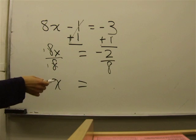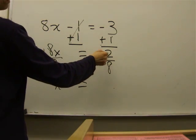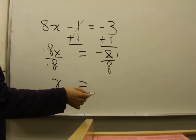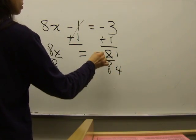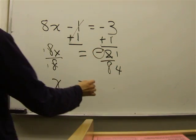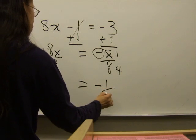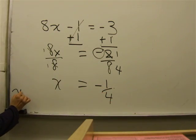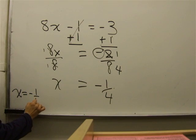You see this fraction. You can reduce it. 2 goes into 2 once. 2 goes into 8 four times. Don't forget your negative sign. Negative 1 over 4. We find that x equals negative 1 over 4.